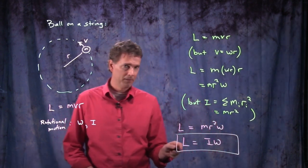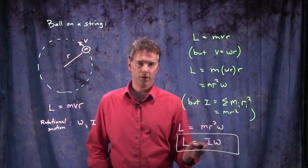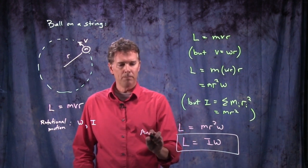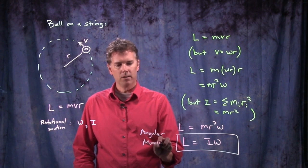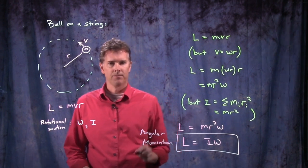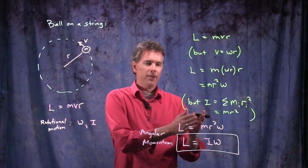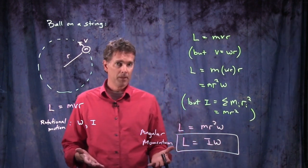This is angular momentum in terms of angular velocity and moment of inertia, and this applies not only to a ball on the end of a string but any object that is rotating. Any object that is rotating, if it has a moment of inertia I and it has an angular velocity omega, this is the angular momentum.